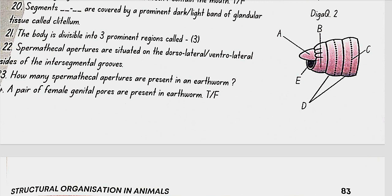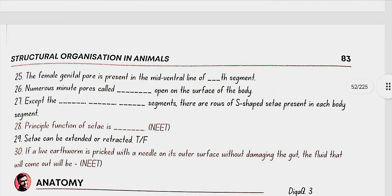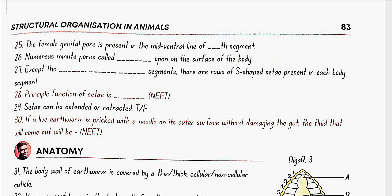Eight spermathecal apertures are present in the earthworm. A pair of female genital pores are present — yes, this is true. The female genital pore is present in the mid-ventral line of the 14th segment. Numerous minute pores called nephridiopores open on the surface of the body. Except the first, last and clitellum segments, there are rows of S-shaped setae present in each body segment. The principal function of setae is locomotion. Setae can be extended or retracted — true.